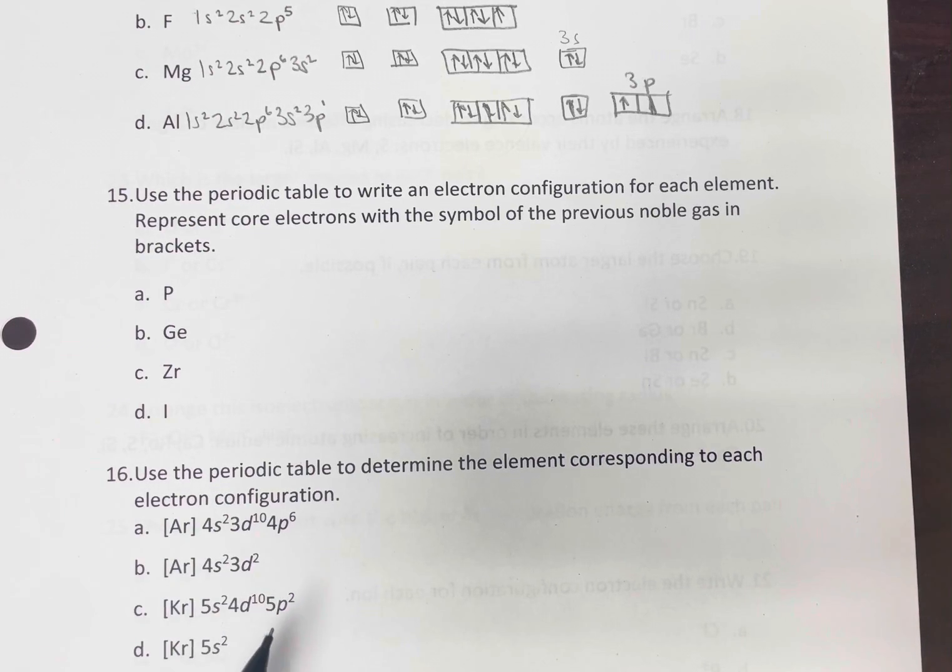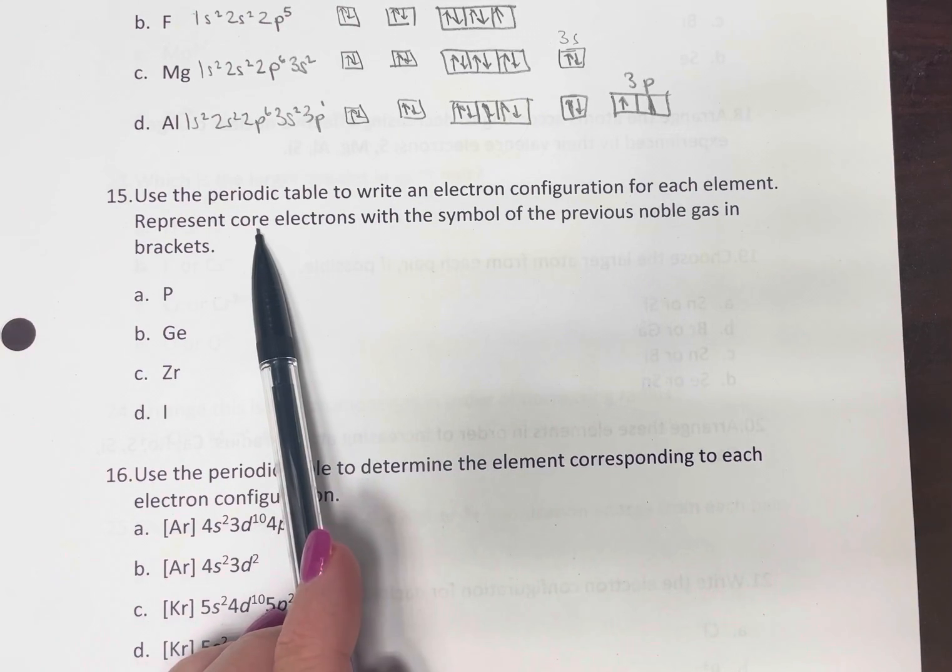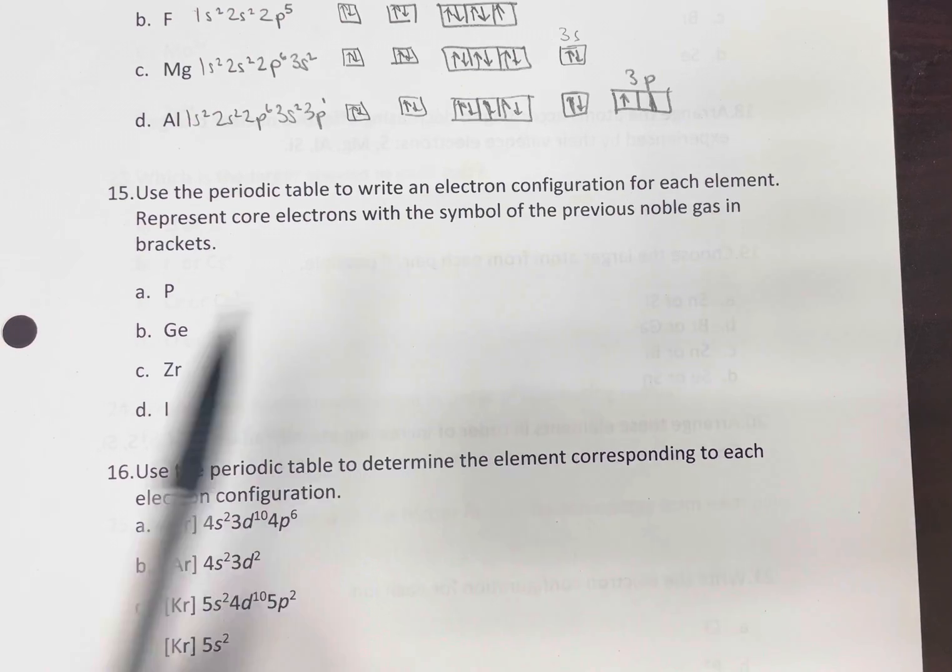Okay, here we're going to be writing abbreviated electron configurations. So it says representing the core electrons with the previous noble gas.